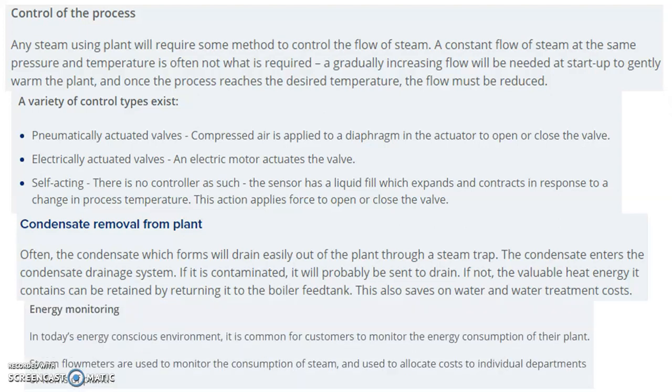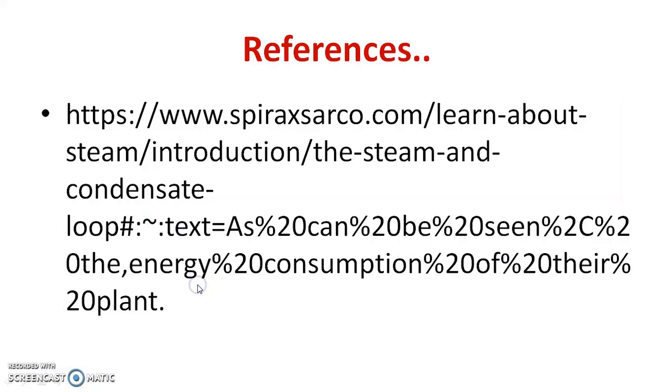Finally, energy monitoring. In today's energy-conscious environment, it is common for customers to monitor the energy consumption of their plant. Steam flow meters are used to monitor the consumption of steam and to allocate costs to individual departments or items of the plant. This way we have studied the steam and condensate loop in the process industry. Thank you very much.